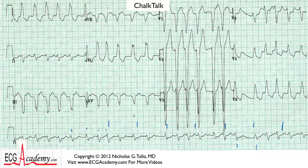Remember that each large box is 200 milliseconds, so it's five boxes per second. I counted off six seconds here, and now we count the number of R-to-R intervals in those six seconds: one, two, three, four, five, six, seven, eight, nine, ten, eleven, twelve, thirteen.